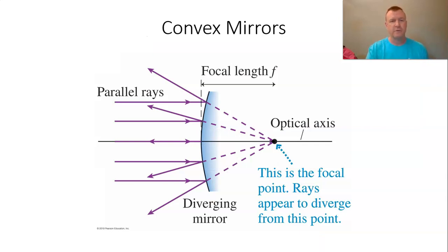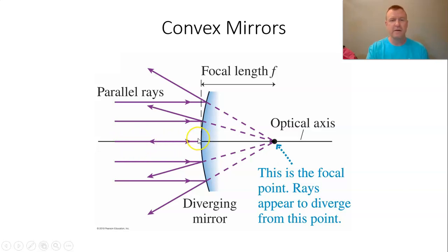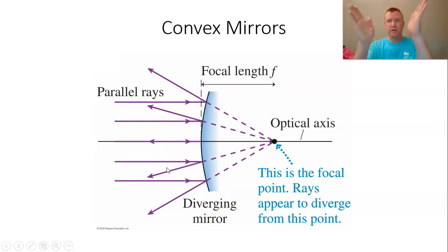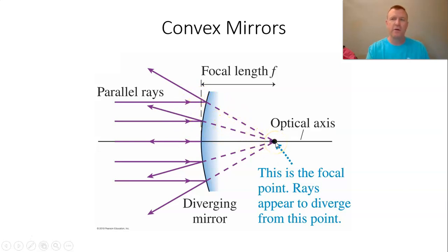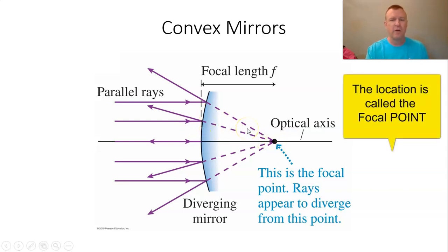Here's a convex mirror with light rays coming in parallel to the axis. Each light ray is going to obey the law of reflection. So the one coming directly in makes a 90-degree angle with the surface and reflects straight back. The one coming in at an angle reflects according to the law of reflection — angle of incidence equals angle of reflection. All of these reflected rays diverge, so another word for convex mirror is a diverging mirror. They all diverge away from a focal point.